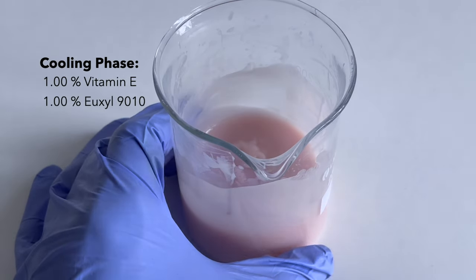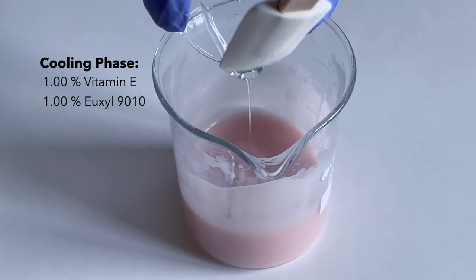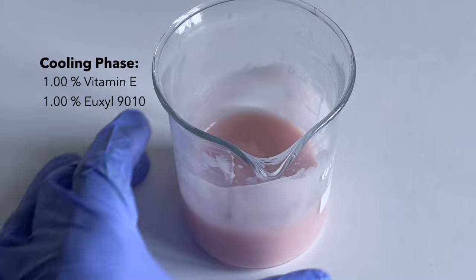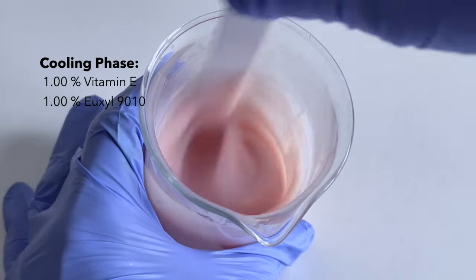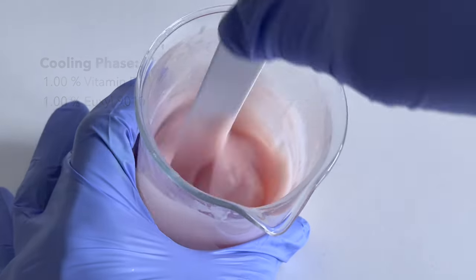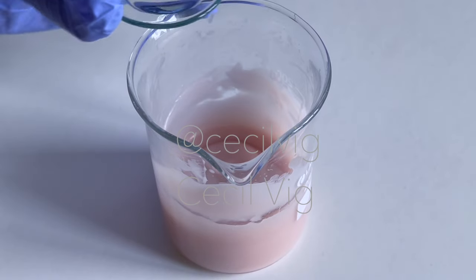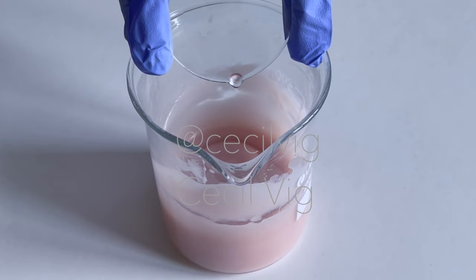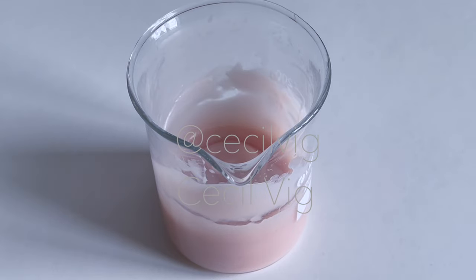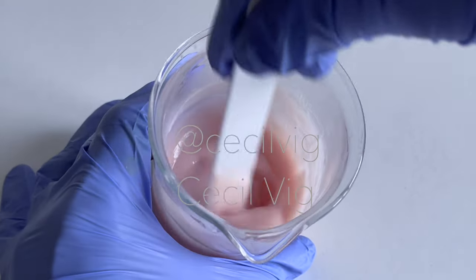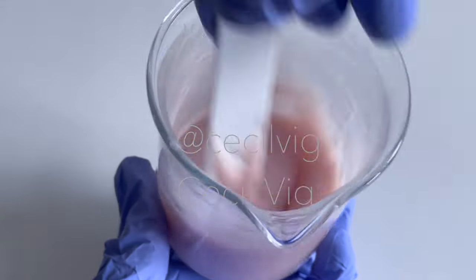The first ingredient I add is vitamin E. Mix well. The next ingredient I add in this cooling phase is the preservative. After adding in the preservative, mix well so it blends with the rest of the ingredients. I mix with a spatula for about a minute or two.